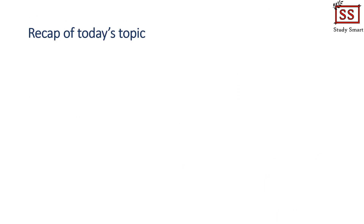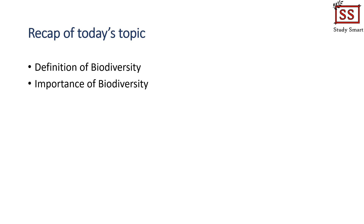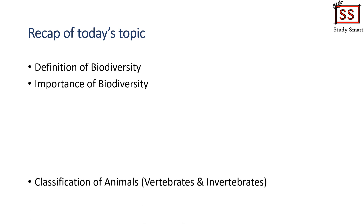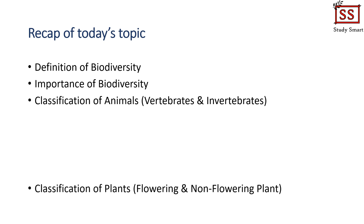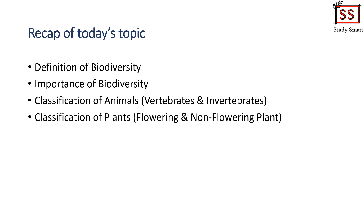We have reached the end of today's topic. Before we finish, let's do a recap. First, we studied the definition of biodiversity — a combination of 'bio' and 'diversity,' meaning different types of living things. Then we studied the importance of biodiversity, with the first key point being that biodiversity provides different types of food for human beings. We also studied the classification of animals into vertebrates and invertebrates, and finally the classification of plants into flowering and non-flowering plants, with flowering plants further categorized as monocotyledon or dicotyledon.